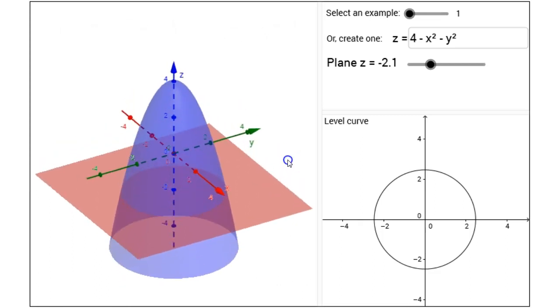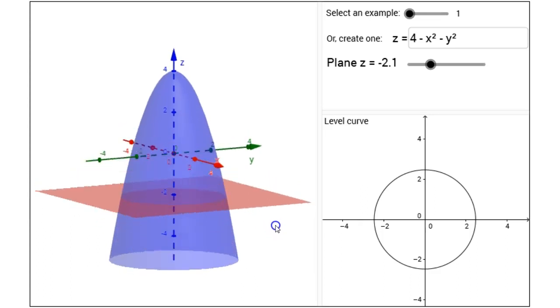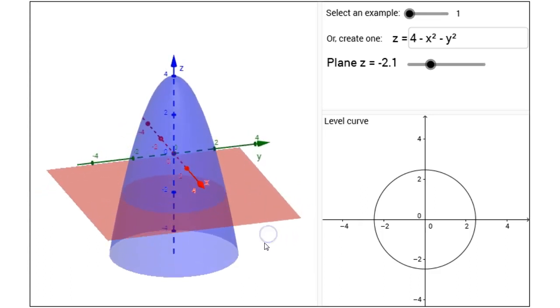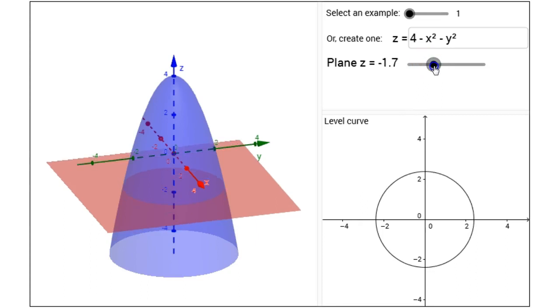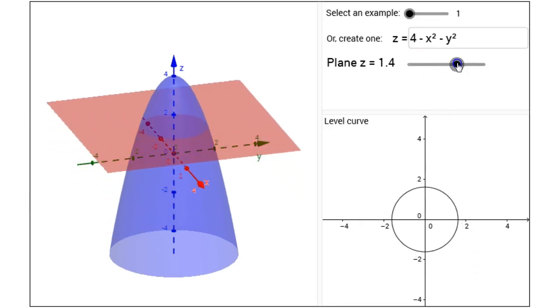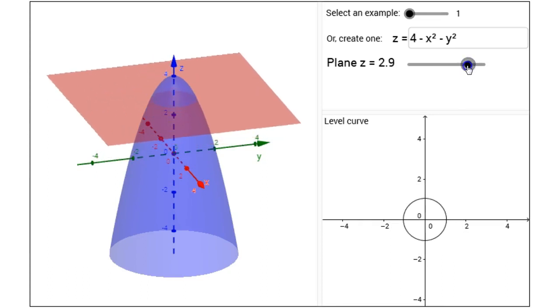Also on the left we see a plane, a pink plane, that is parallel to the xy plane, and right now that plane has a z value of negative 2.1. I can adjust that z value and see how the plane cuts through the surface for various values of z.